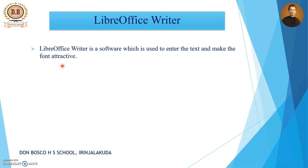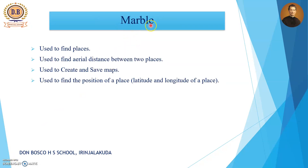Now let us move to the second software, that is Marble. What are the uses of Marble software? We can use this software to find places, just like Google Maps. The second use is it is used to find the distance between two places — the real distance between two places, how many kilometers are between two places. And also it is used to create and save maps.